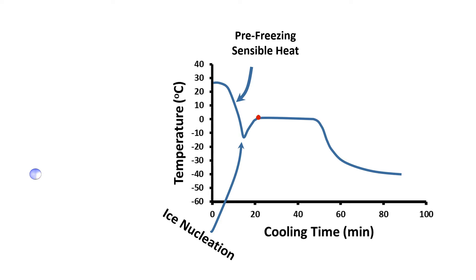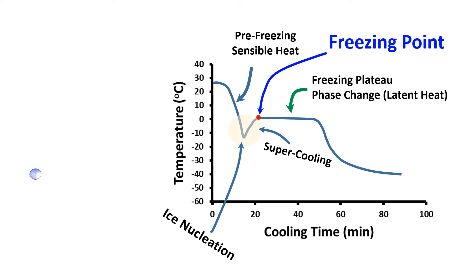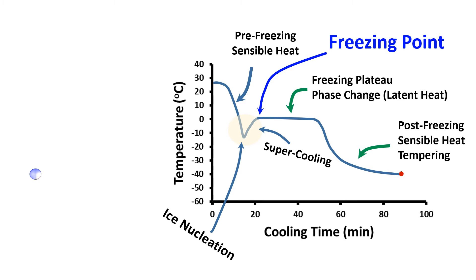Third, the temperature reaches its highest point, which is the freezing point. The process of lowering temperature below the freezing point is called supercooling. Then water reaches its freezing plateau when latent heat is removed and temperature remains constant until all water is transformed into ice. Finally, temperature decreases again — this part is called post-freezing or tempering — and the sensible heat of ice is removed. At the end the ice reaches equilibrium temperature with the environment.